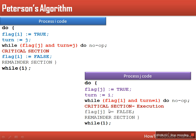Process j then starts executing its critical section. Once that critical section execution is done, process j also sets flag[j] to false and then the remainder section will be executed. Peterson's solution is a simple algorithm using two types of variables: one variable specifies the intention of the process, and the second variable specifies which process is allowed to enter the critical section at the current time.